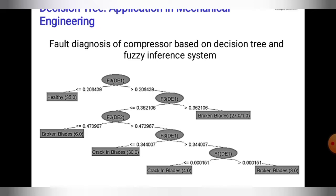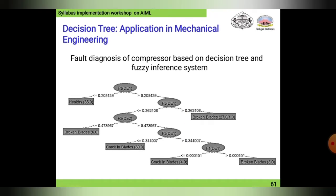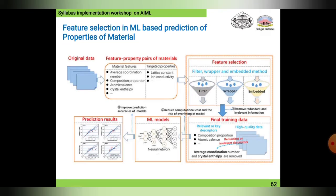Continuing down the decision tree: if broken blades, a value less than 0.4 is given. If not broken blades, it is forwarded again to the crack side. If there is a crack, a value less than 0.3 is given; if greater, it proceeds to check for different crack types. This is the decision tree of the fuzzy inference system — it is fuzzy logic, based on values for feature selection and ML-based prediction of material properties.